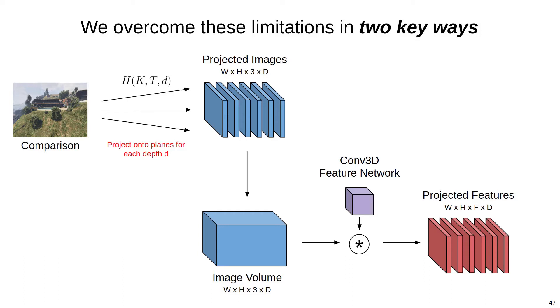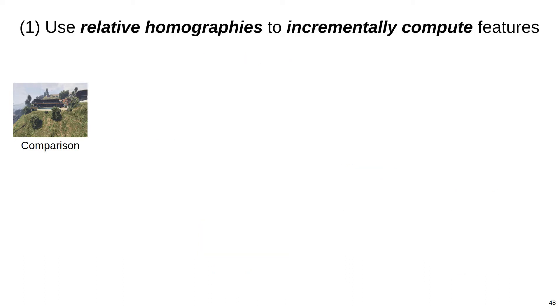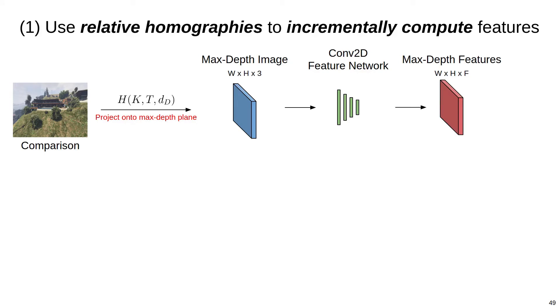Instead, we'll overcome these limitations in two key ways. First, we'll utilize relative homographies to incrementally compute the projected features using only a single invocation of the feature network. The way this works is that we take our image and project it onto a plane corresponding to the maximum depth sample. We then feed the projected image through our 2D convolution-based feature network to generate an initial feature map. We then take that feature map, which we'll call f_d here, and use it to compute the features for the plane corresponding to the next depth sample, f_{d-1}. The way we compute f_{d-1} from f_d is using the relative homography between the planes.